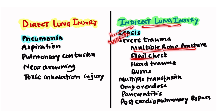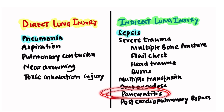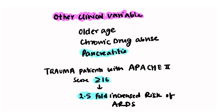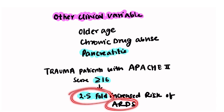Indirect lung injury can be caused by sepsis, severe trauma such as multiple bone fractures, flail chest, head trauma, burns, multiple blood transfusions, drug overdose, pancreatitis, and post-cardiopulmonary bypass — with sepsis being a very important cause. Other clinical variables that may make a patient prone to developing ARDS include older age, chronic drug abuse, and pancreatitis. Patients with an APACHE II score greater than 16 have a 2.5 times increased risk of developing ARDS.